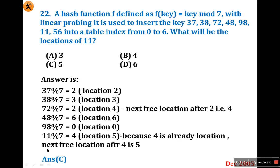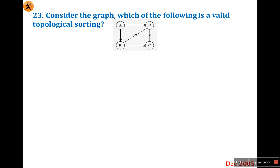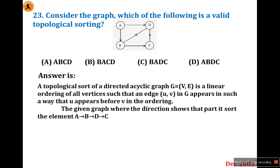Question 23: Consider the graph — which of the following is a valid topological sorting? You need to understand the definition of topological sorting. Topological sort of a directed acyclic graph is a linear ordering of all vertices such that for an edge (u, v) in G, u appears before v in the ordering. It is applicable only to directed acyclic graphs.